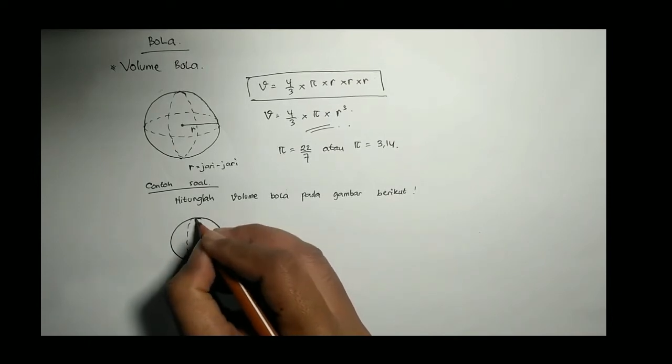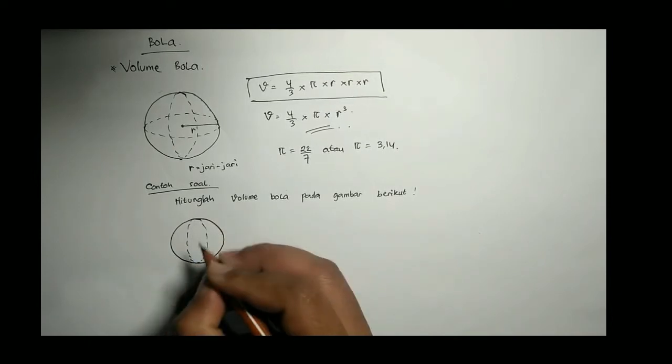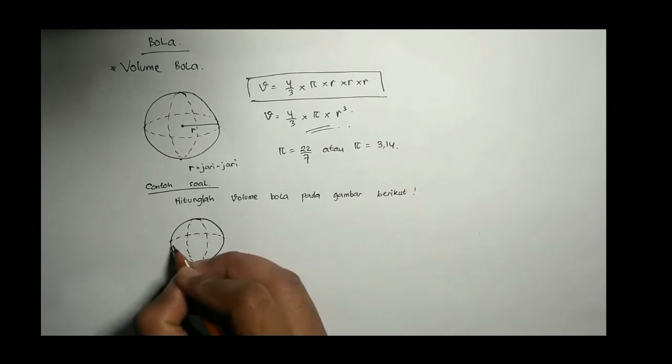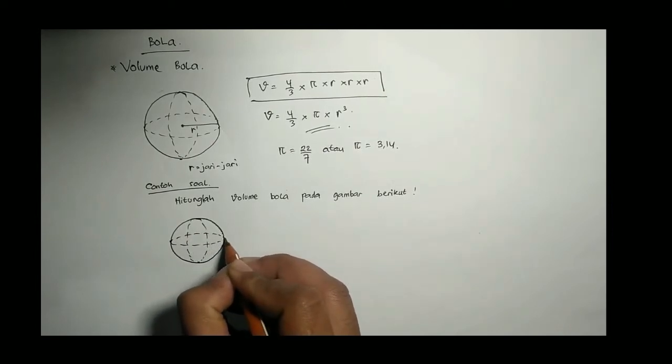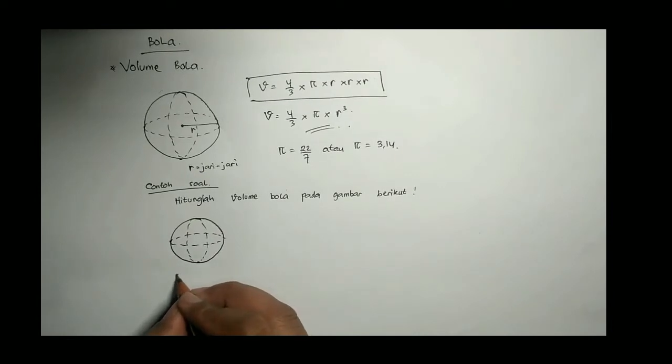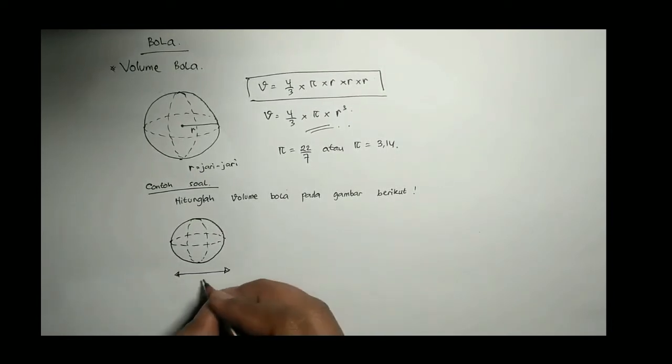Yang perlu kalian ingat kembali seperti mempelajari lingkaran, kita gunakan π 22/7 kalau R nya kelipatan 7, kalau π 3,14 untuk R nya bukan kelipatan 7. Oke kembali ke contoh soal, ini saya gambarkan bola ya. Misalkan ada soal seperti ini, 6 cm.